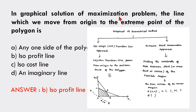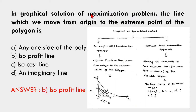As per the question, in the graphical solution of a maximization problem, the line which we move from origin to the extreme point is related to the isoprofit or cost function line approach. For a maximization problem, this line is called the isoprofit line because profit is what we maximize, whereas for minimization we use the isocost line. So option B, isoprofit line, is correct.